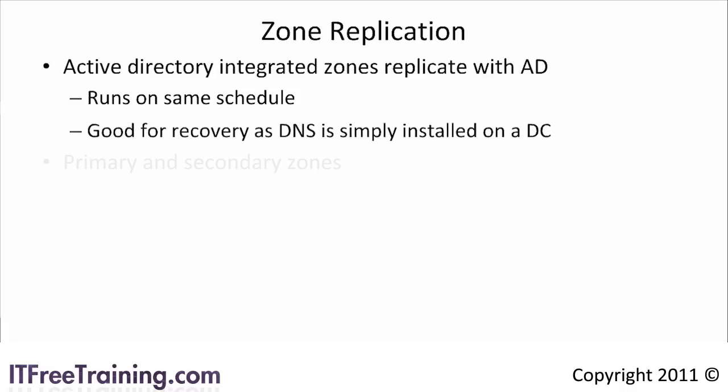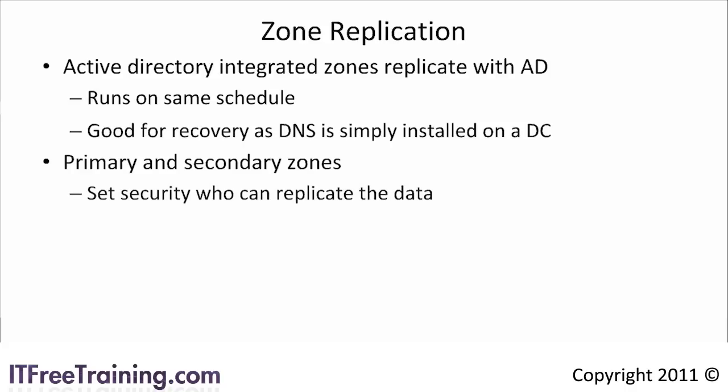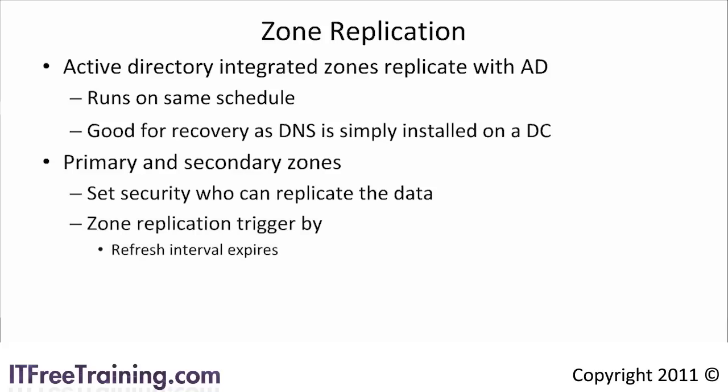If you are using primary or secondary zones, the big thing that you need to do is set security on the zone so that other DNS servers can replicate the data. By default, no one can replicate DNS data from your DNS server. Once your security is set up, the secondary zone needs to perform zone replication to keep its records up to date. Zone replication can be triggered by the refresh interval expiring.